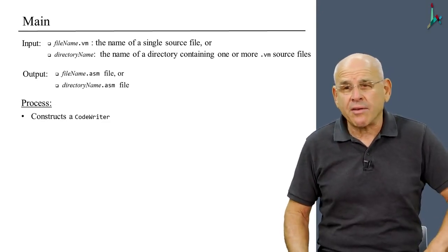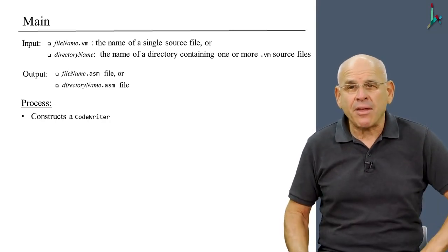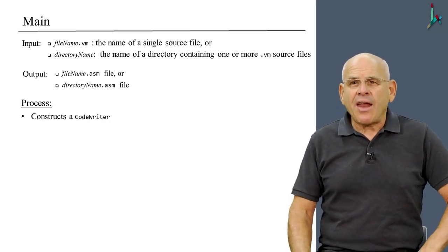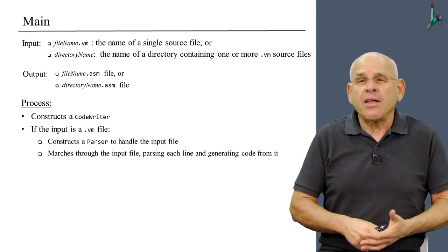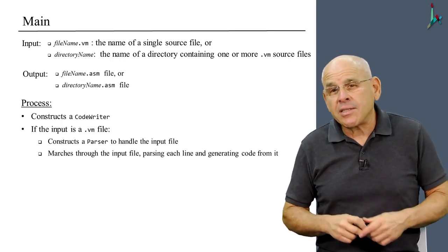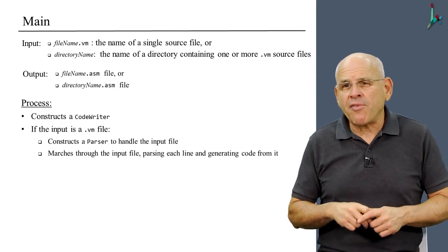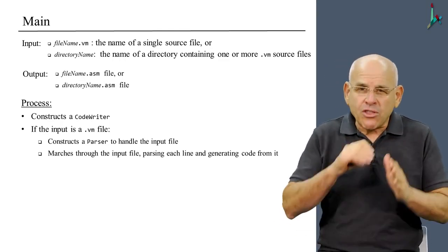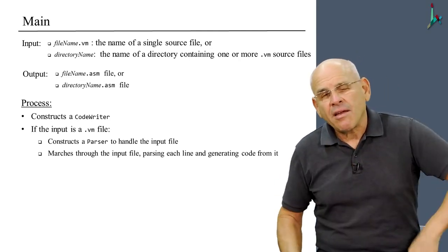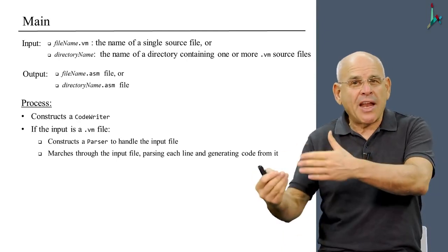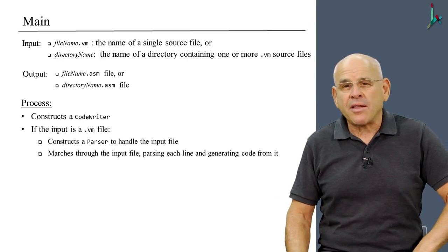First of all, it will construct a code writer in order to handle the output file, which is still empty at this stage. And then it is going to ask itself if the input is a file or a directory. If the input represents a single file, then it will construct a parser to handle this input file, and then it will go into a loop that marches through every command in the input file, parses it, and hands over the lexical elements to the code writer in order to generate the assembly code.